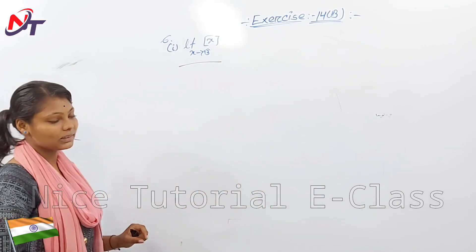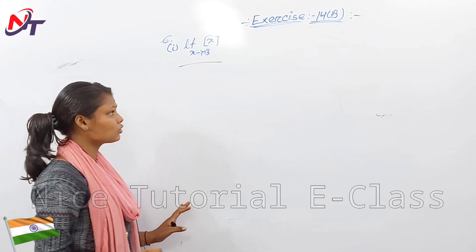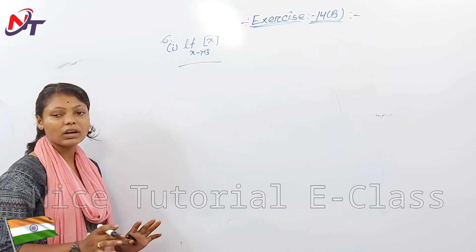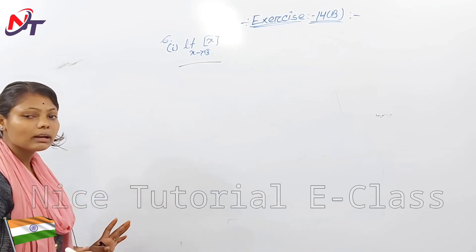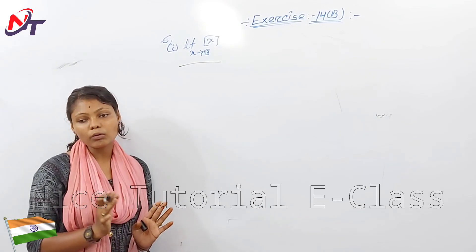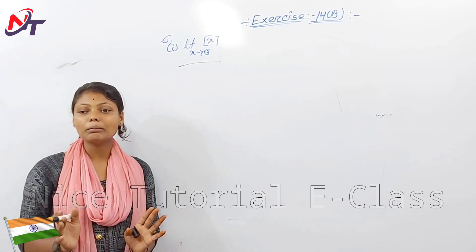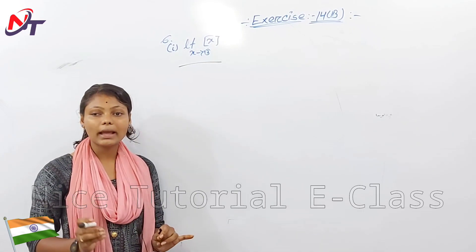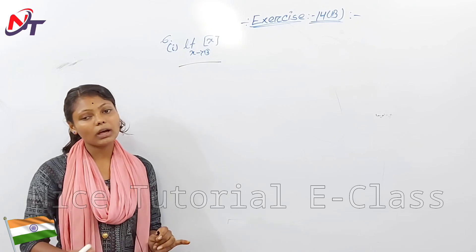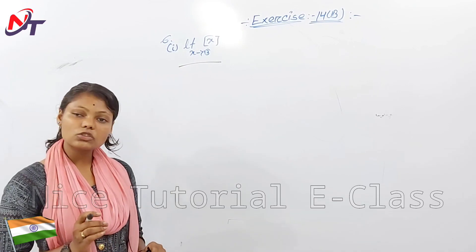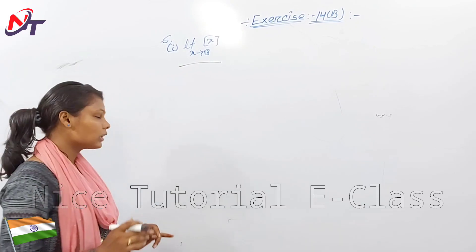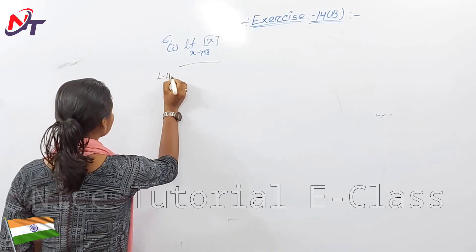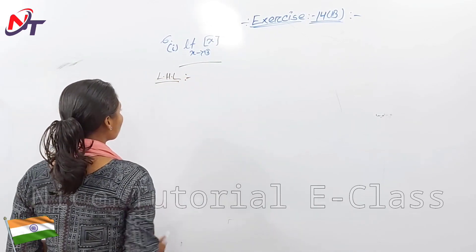The limit exists if the left-hand limit is equal to the right-hand limit. If they are not equal, the limit does not exist. LHL is the left-hand limit.